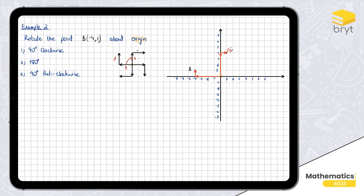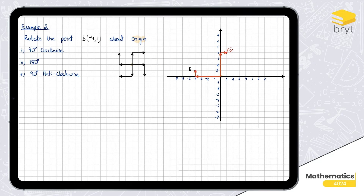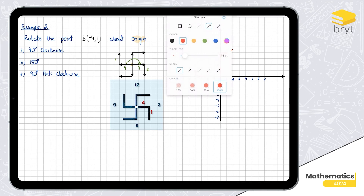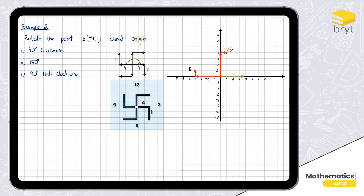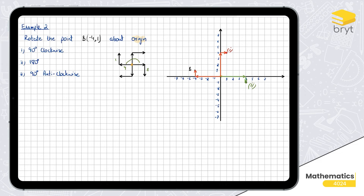For 180 degrees there's no need to specify direction. The object is still four units to the left and one unit up. Spinning 180 degrees — clockwise or anticlockwise — it goes four units right and one unit down. Let's do that: four right and one down. That's the answer to part two.